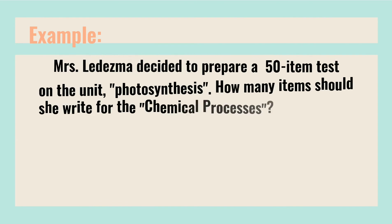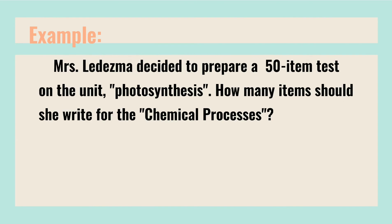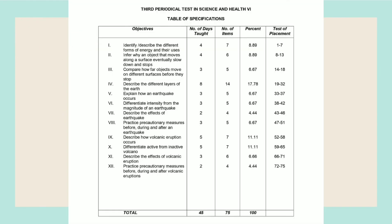For example, Mrs. Ledesma decided to prepare a 50-item test on the unit photosynthesis. How many items should she write for chemical processes? So: 50 items × 0.20 = 10 items. In public school, the most commonly used TOS format has: the first column for objectives from the competencies, second column for number of days taught, third column for number of items, fourth column for percentage, and the last column for test placement.